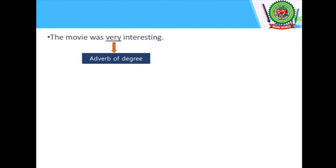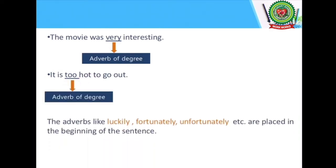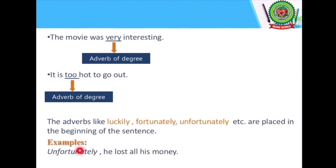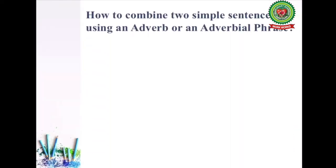Another example of degree: 'It is too hot to go out' — 'too' is an adverb of degree, placed before the word 'hot' as it qualifies 'hot.' Adverbs like 'luckily,' 'fortunately,' 'unfortunately,' etc. are placed at the beginning of the sentence. Example: 'Unfortunately, he lost all his money.'